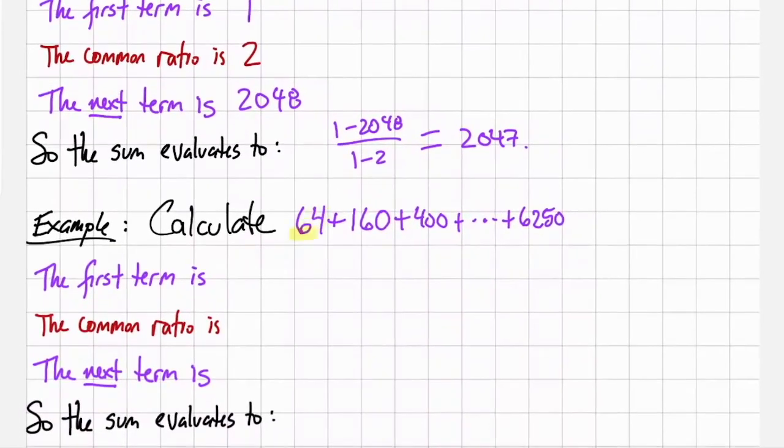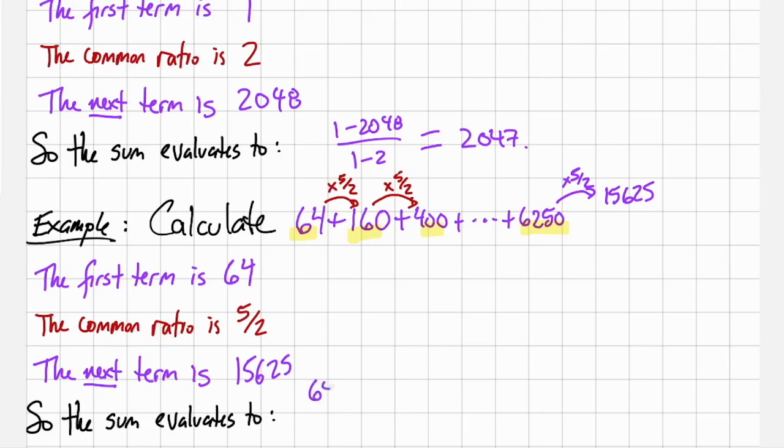Here's another example, 64 + 160 + 400 + dot dot dot + 6250. We can see that this is a geometric series where to get from 64 to 160, we multiply by five halves. From 160 to 400, we multiply by five halves. Now the first term is 64. The common ratio is five halves. And the next term is what happens when we multiply 6250 times five halves, which gives us 15625. So the sum evaluates to 64 minus 15625 divided by 1 minus five halves, and that is negative 15561 divided by negative three halves, which is 10,374.